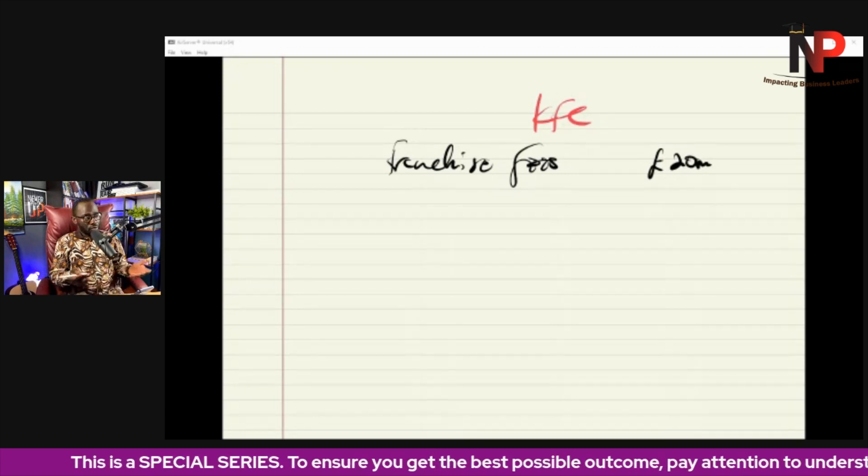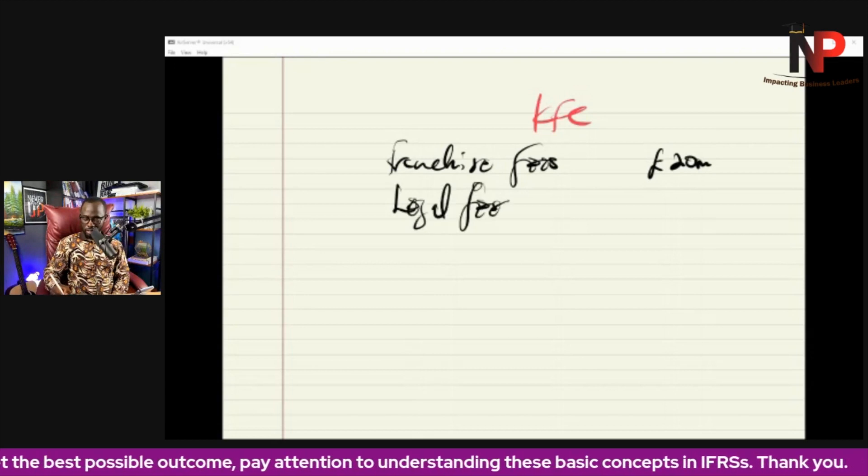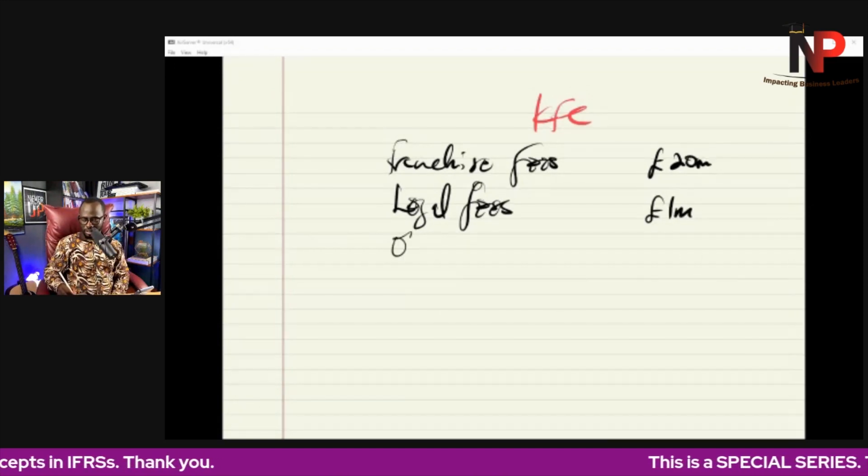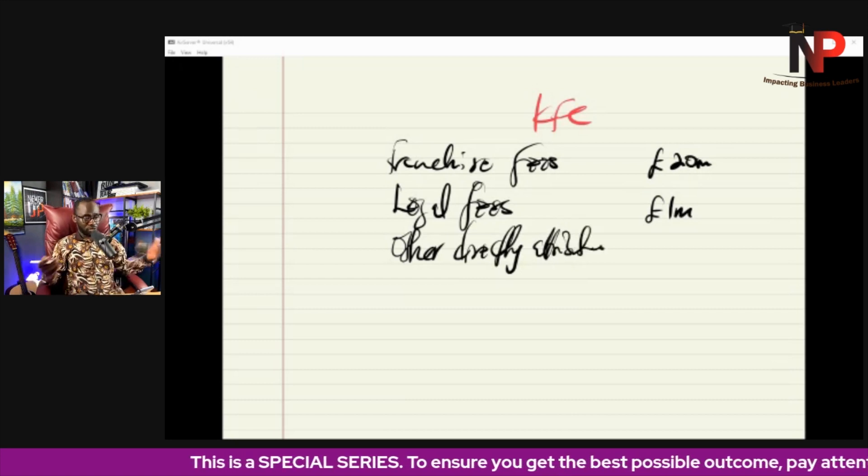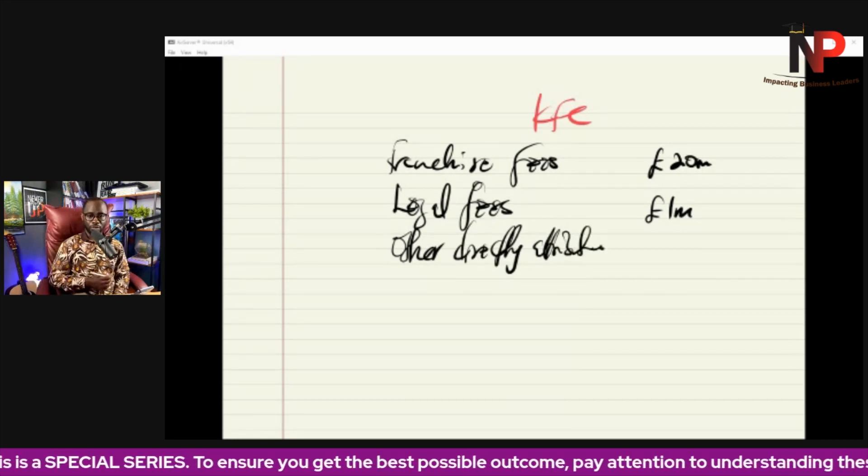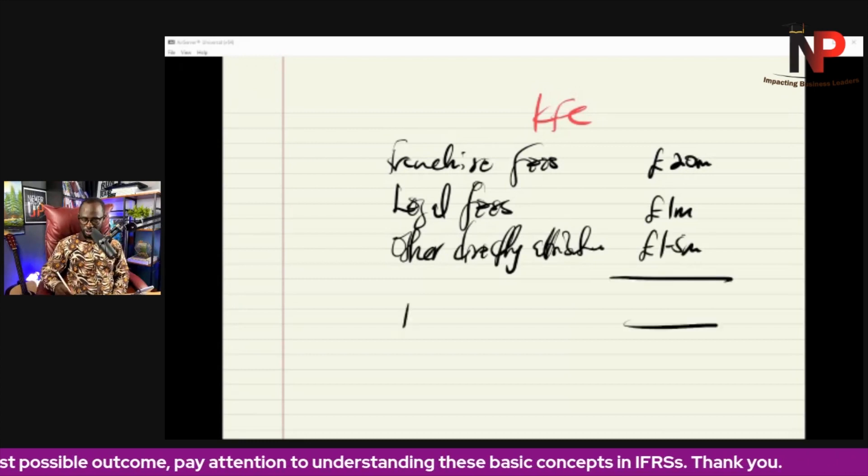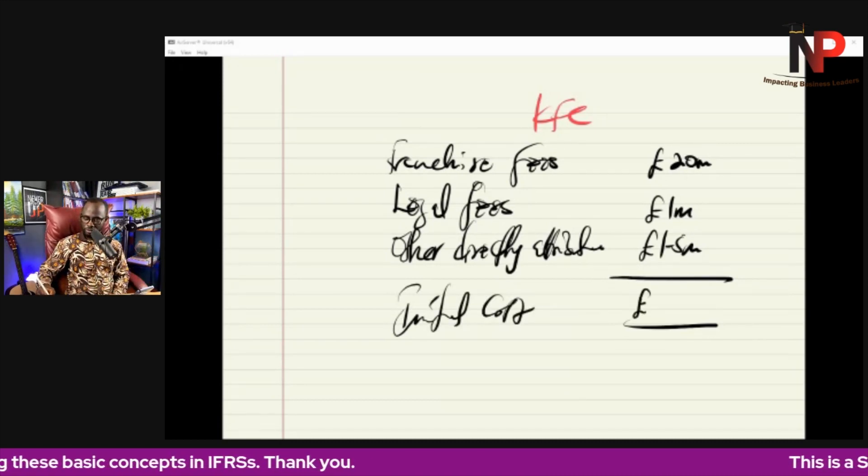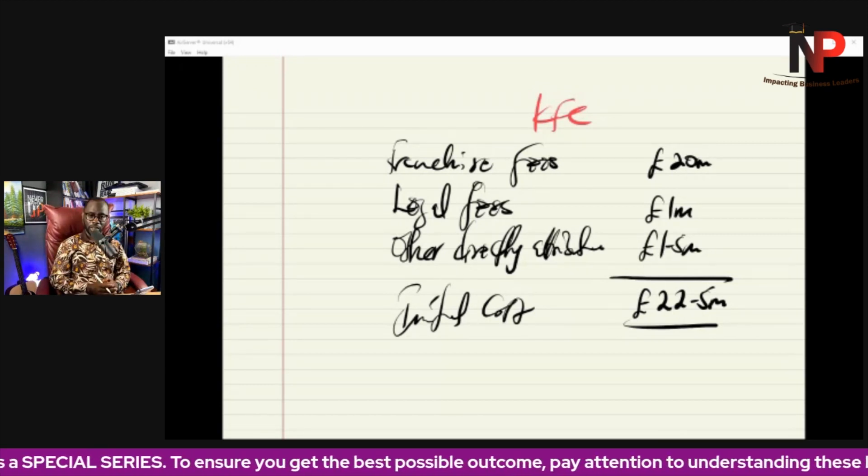Let's assume that is like 20 million. Then before we arrange the deal, we need to engage some lawyers. So we paid some legal fees, let's say about a million. Then probably some other directly attributable costs that we incurred in arranging this deal. Maybe we need to get some legal clearance, some government approval in relation to the franchise, and that is like 1.5 million. So the initial cost at which the franchise we purchase from KFC will be recognized will be 22.5 million. That is what we mean by the initial measurement of intangible assets.